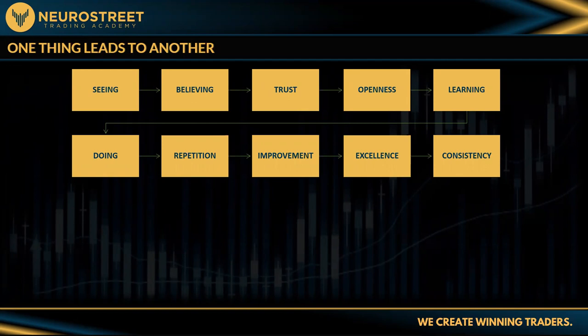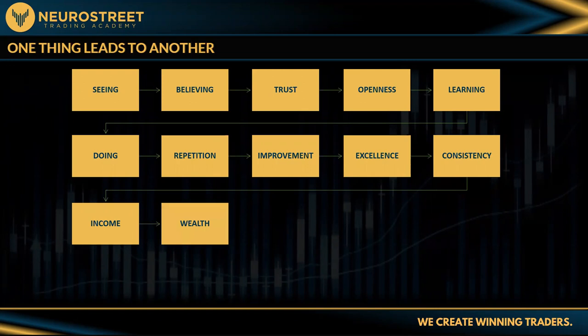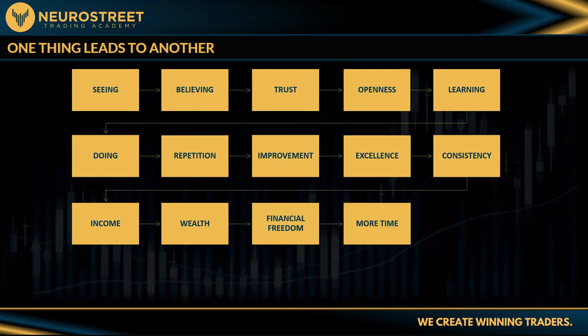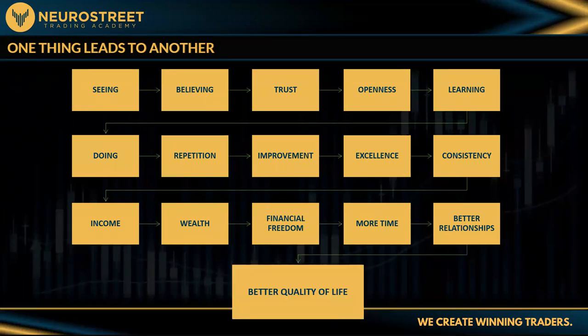87% of us in the room are not yet at consistency. You cannot skip steps — you have to go in order. After consistency comes income, income leads to wealth, wealth leads to financial freedom, financial freedom leads to more time, and more time leads to better relationships, better health, and better quality of life. It all starts with seeing is believing.